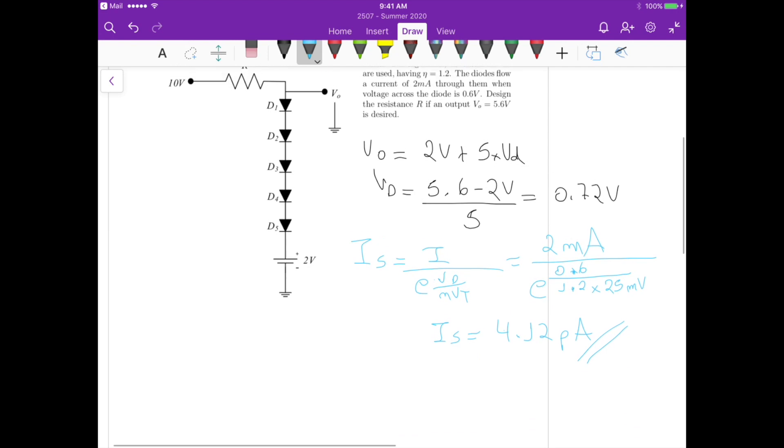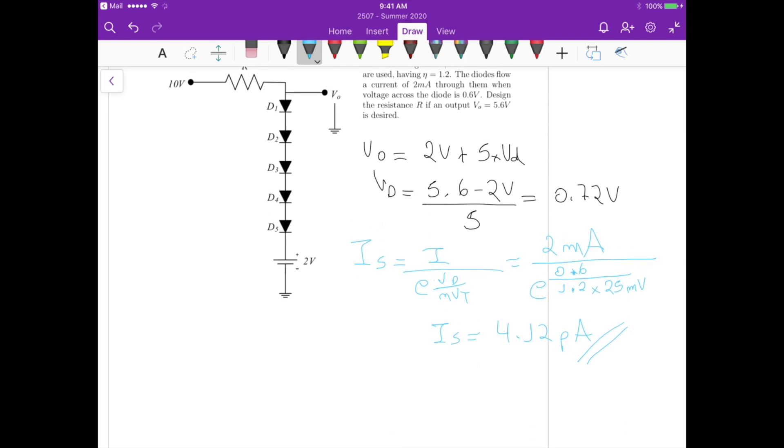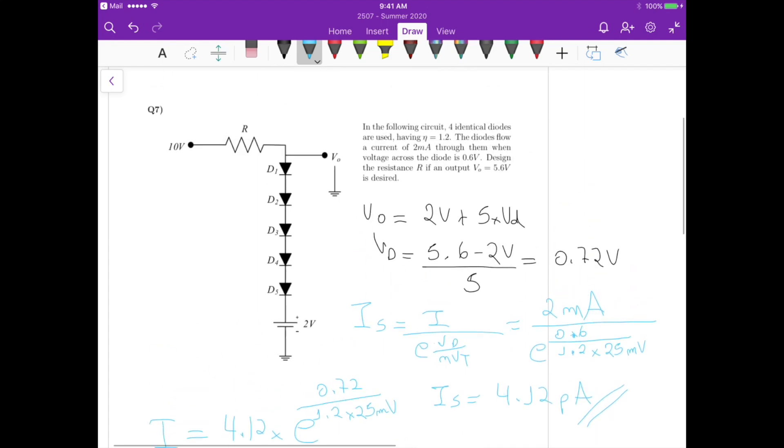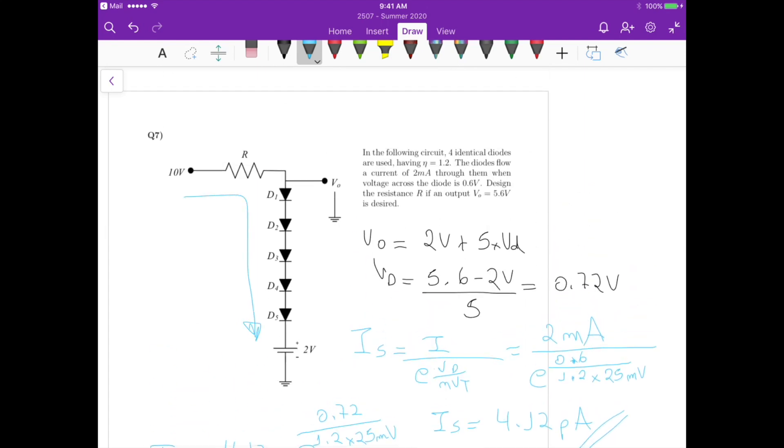Now that we know the saturation current, we need to figure out what's the new value of the current to provide those 0.72 volts. We calculate the new I equals the saturation current, so it's 4.12 times exponential of 0.72 divided by 1.2 times 25 millivolts. This gives us a current of I equals 89.86 milliampere. That's the current we should have flowing through the diodes.